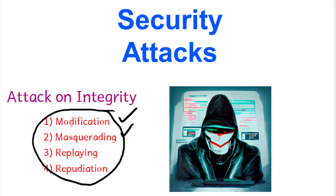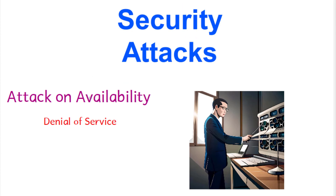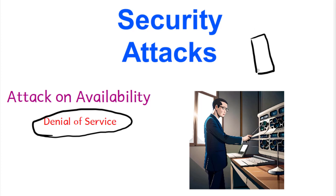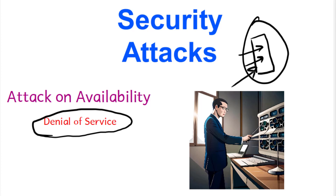An attack on availability is commonly done through a Denial of Service (DoS) attack. A server provides services to authorized customers. An attacker sends millions of bogus requests to the server, causing it to run out of resources and become unable to serve legitimate users. The services go down and are no longer available to authorized users.